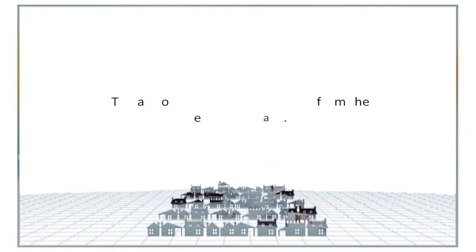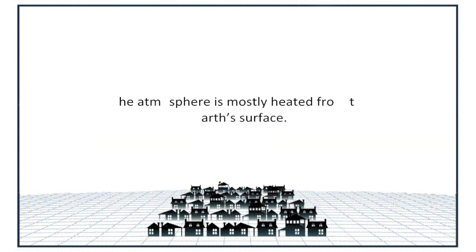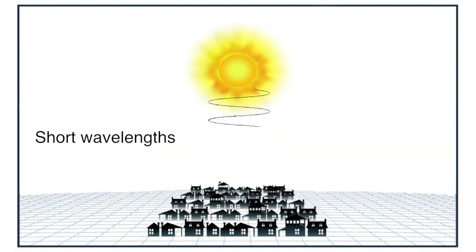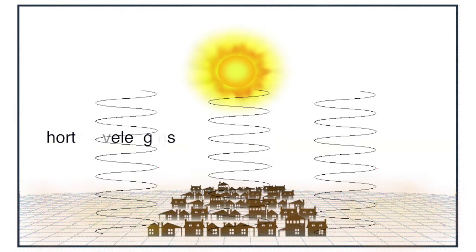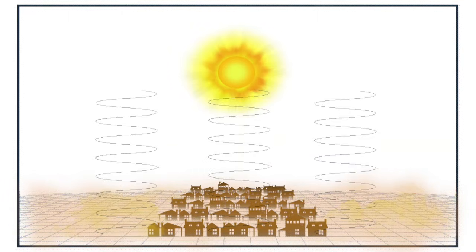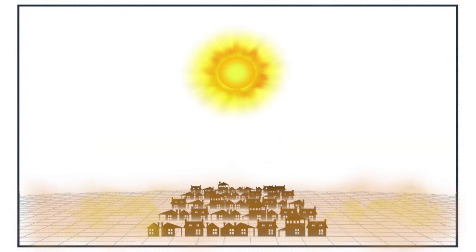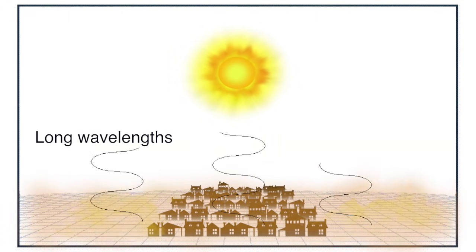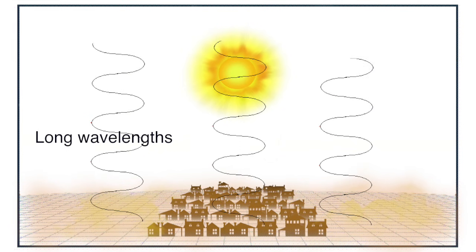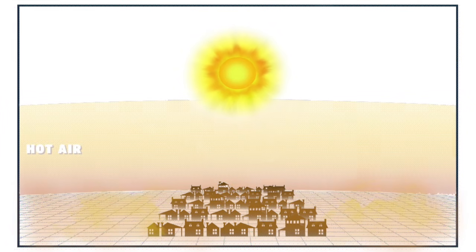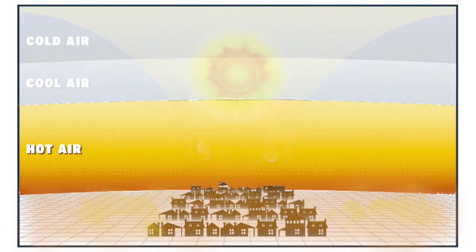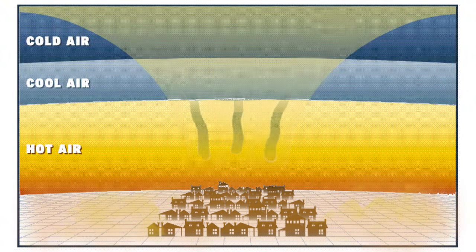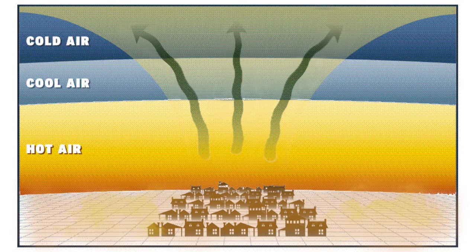The atmosphere is mostly heated from the Earth's surface. Sunlight, in the form of short wavelengths of energy, travels through the atmosphere and is absorbed by the Earth's surface. The energy is then emitted back into the atmosphere, but at longer wavelengths of energy. The atmosphere is heated from these longer wavelengths. The farther from the heat source, which is the Earth's surface, the cooler it gets.